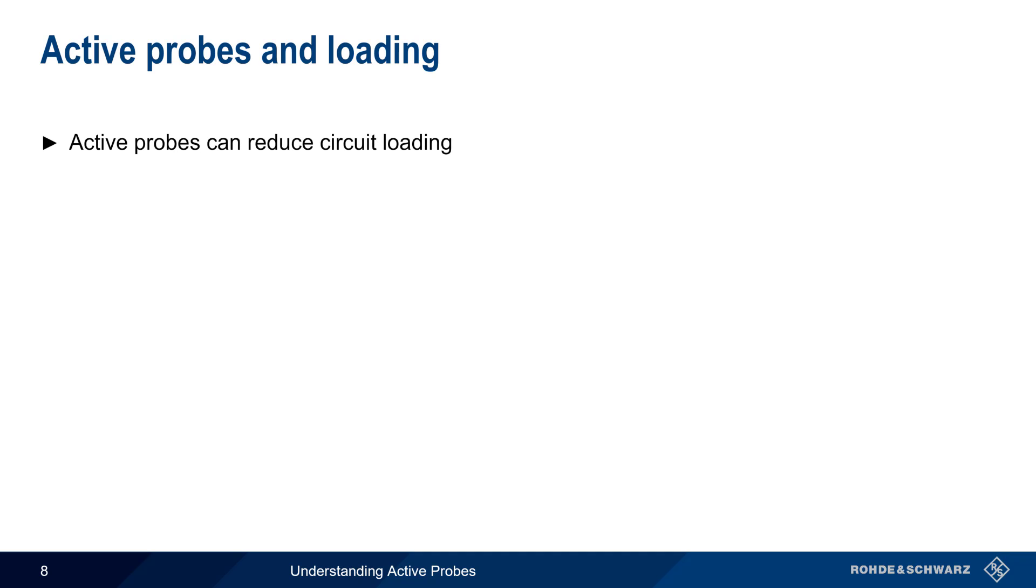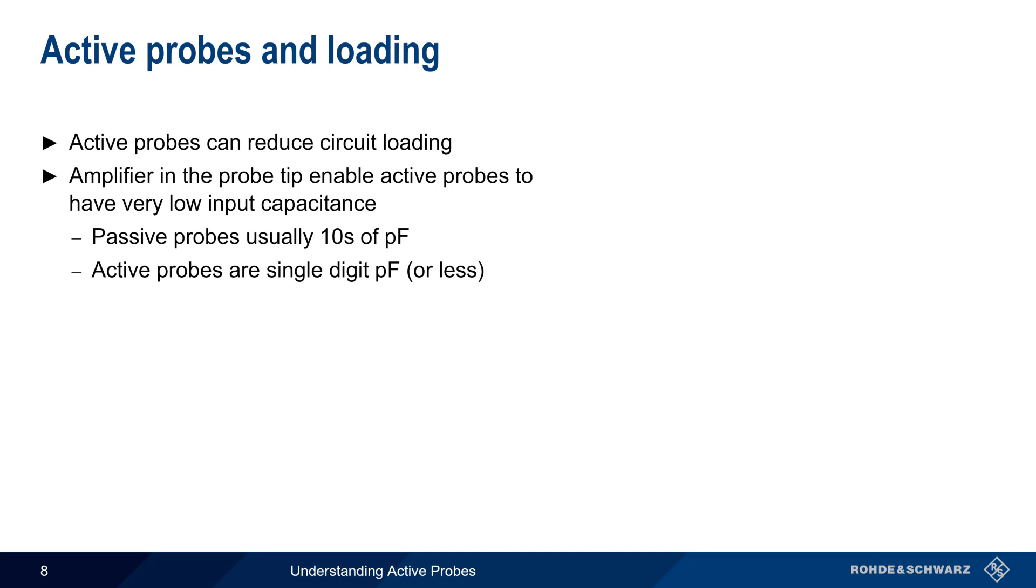One of the advantages of active probes is that they can reduce circuit loading. The amplifier in the tip of an active probe enables active probes to have very low input capacitance. Traditional passive probes have input capacitances in the range of tens of picofarads, whereas the capacitance in active probes is commonly single-digit picofarads or less.